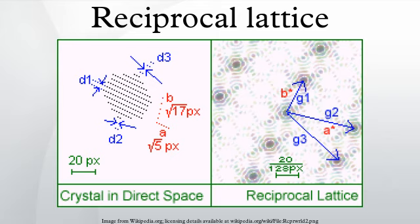While the direct lattice exists in real space and is what one would commonly understand as a physical lattice, the reciprocal lattice exists in reciprocal space. The reciprocal lattice of a reciprocal lattice is the original direct lattice again, since the two lattices are Fourier transforms of each other.